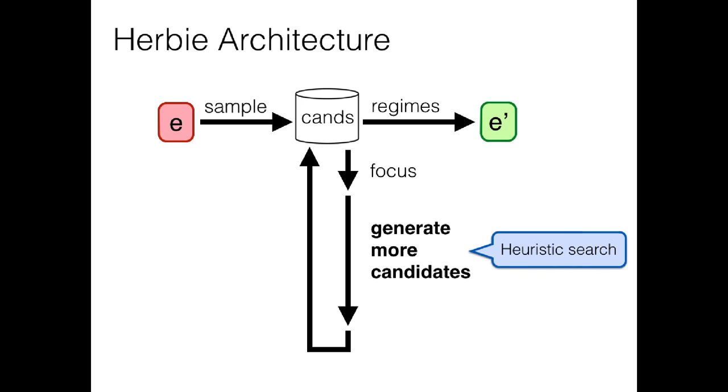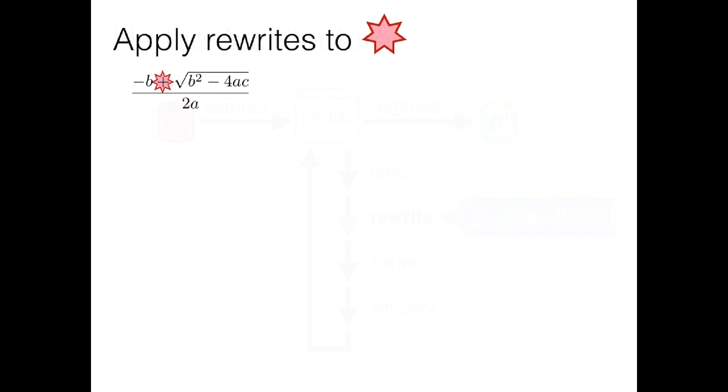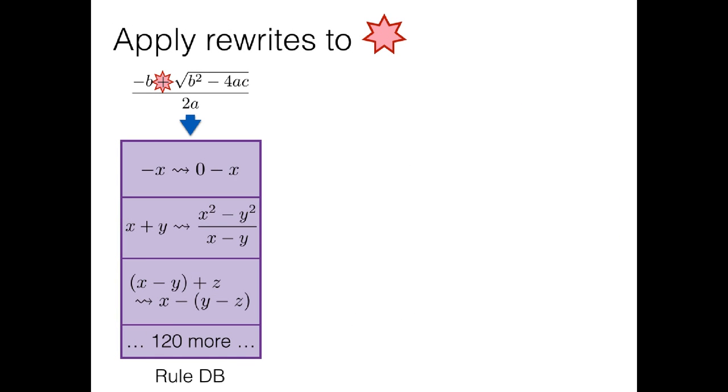Herbie actually has three separate techniques to generate these candidates. The first is to use a rewrite database. And what I mean by that is to take our program and pass it through a database of mathematical identities. These are the usual things like the difference of squares formula, the associativity of addition, and basic facts about trigonometry. Now each of these rules, we're going to try to match it against the operator that we've identified as problematic. Some of the rules don't talk about that operator. This first one, for example, just won't match against the addition.